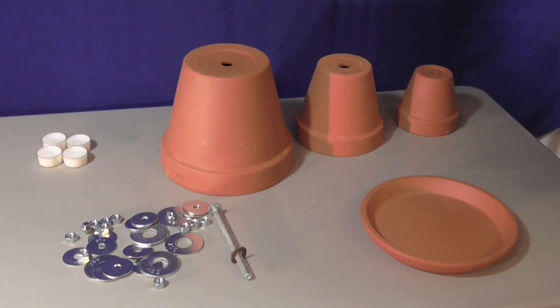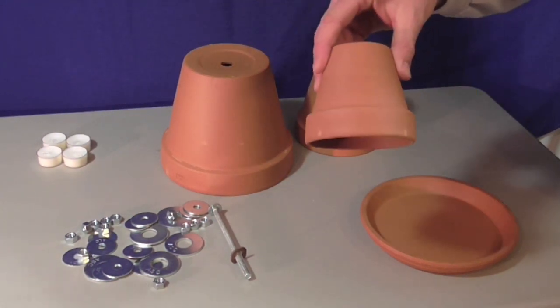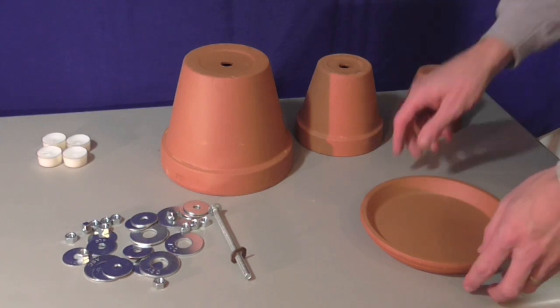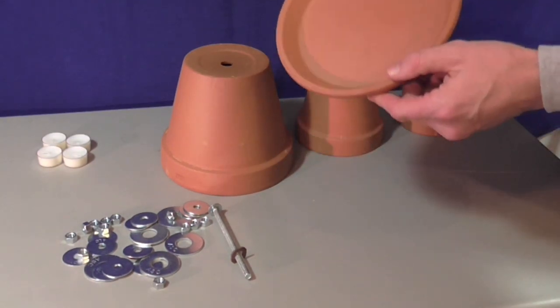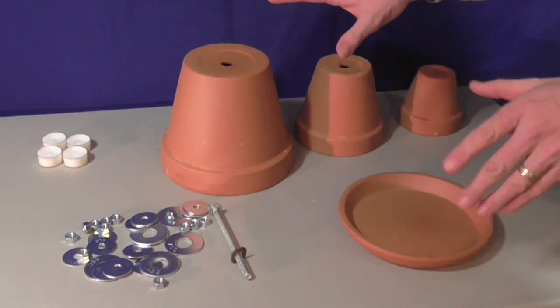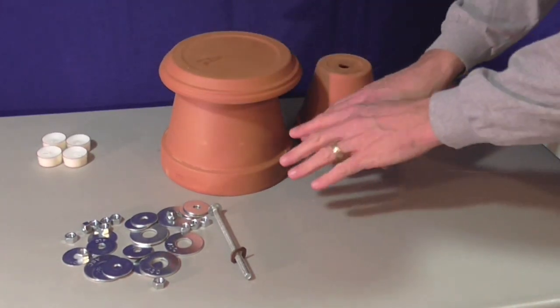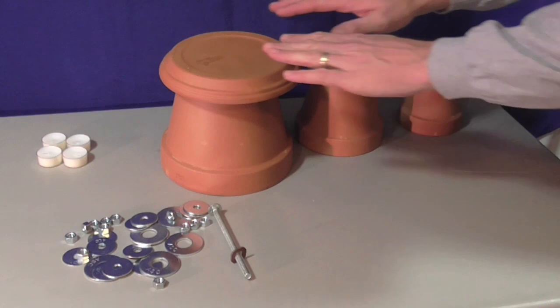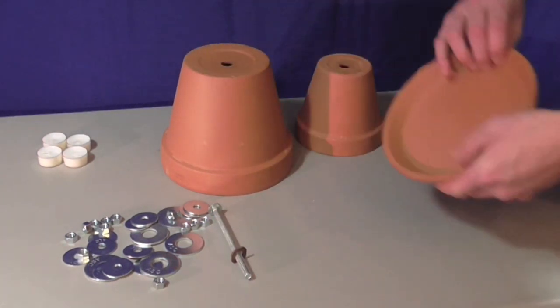Okay, here is my terracotta clay pot setup. Here's an eight inch pot, a six inch pot, and this one's like a four and a quarter inch pot. And then I also just have like a saucer plate that's going to go on the top. I think this is going to be kind of the secret sauce. It's going to eventually go on the top, and as the heat rises up, this plate will help spread the air out in the room a little bit better.